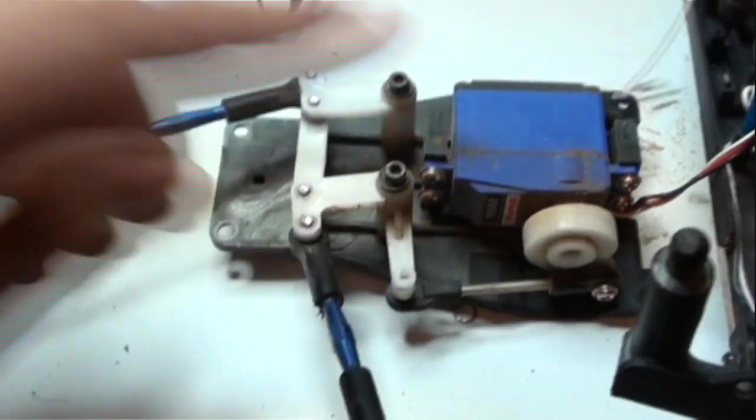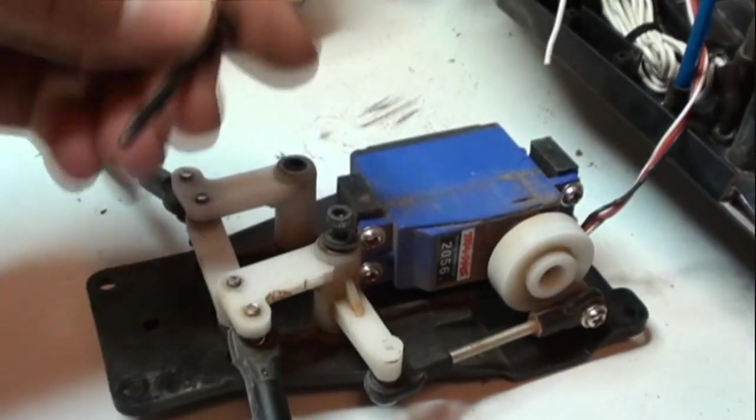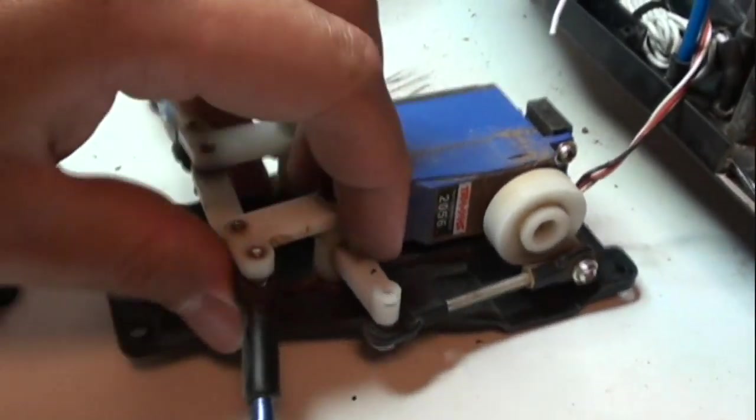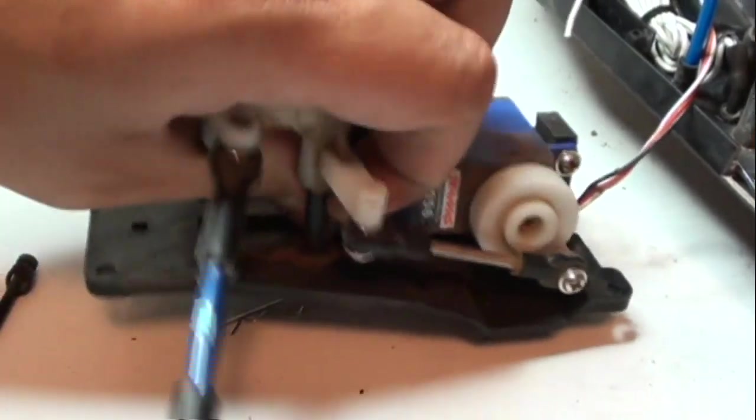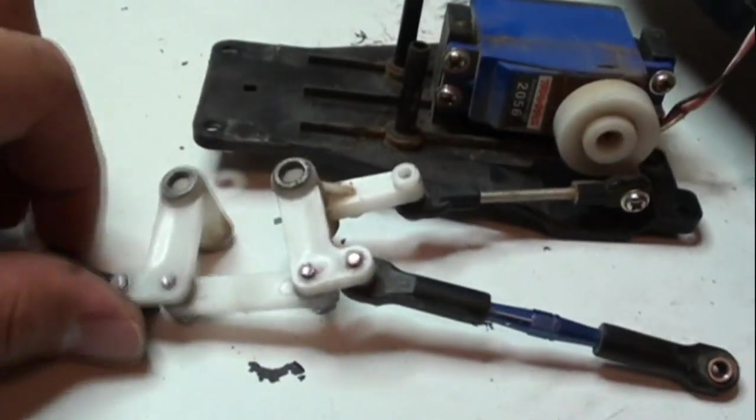Now I'm going to take all of this off. First step, remove the hex screws that hold in the steering bell crank. Now let's put this, I'm going to go ahead and slide off and move that to the side.